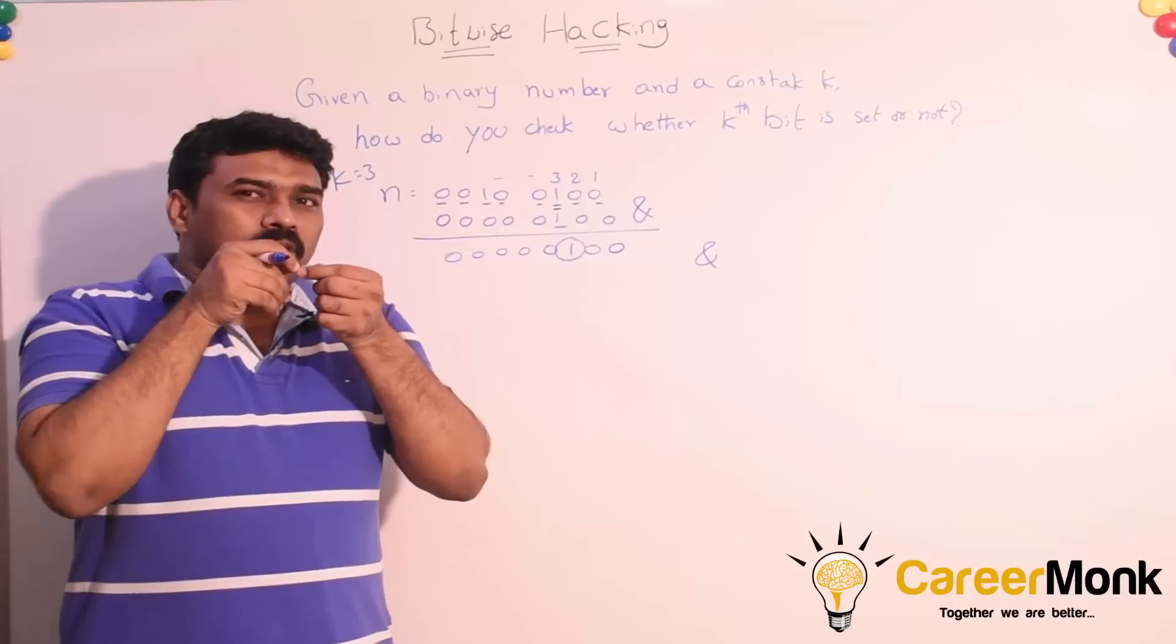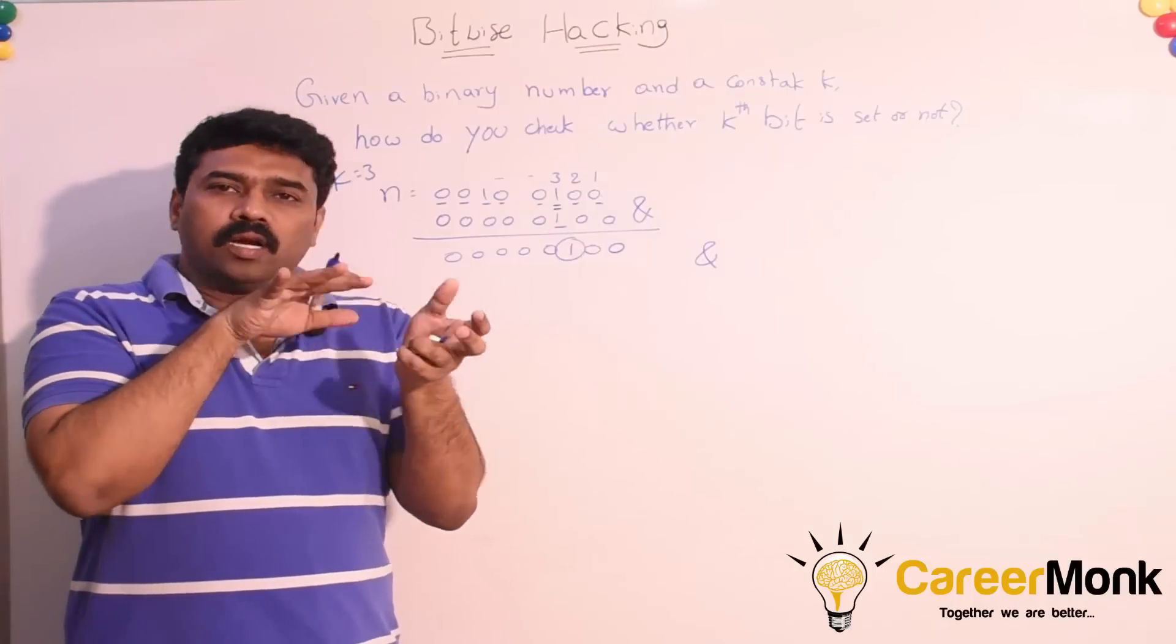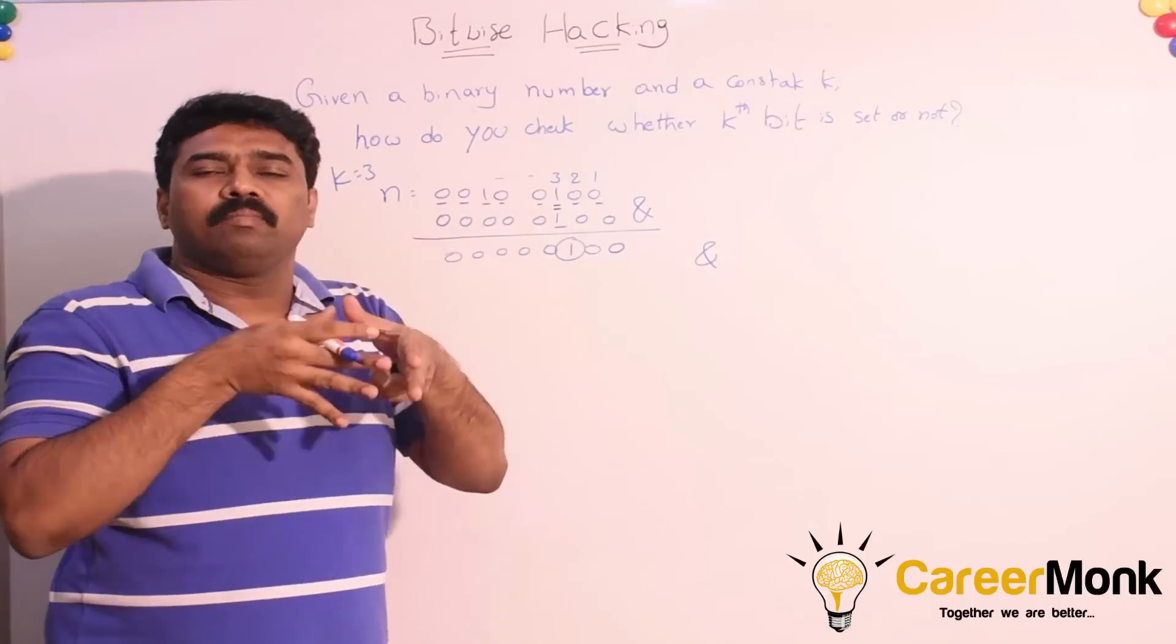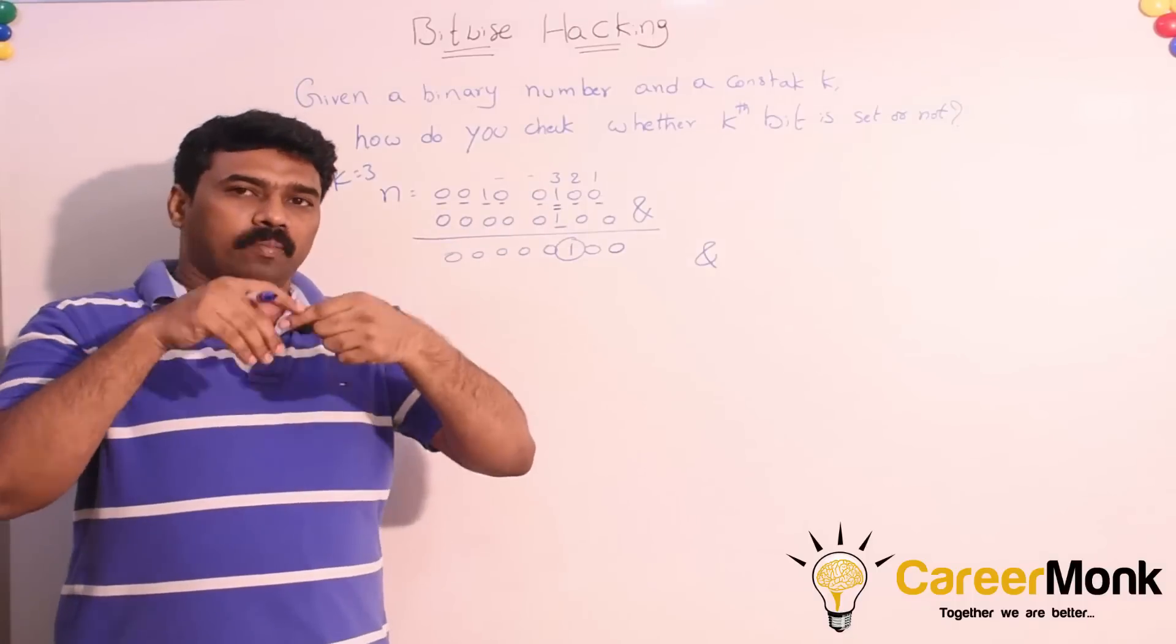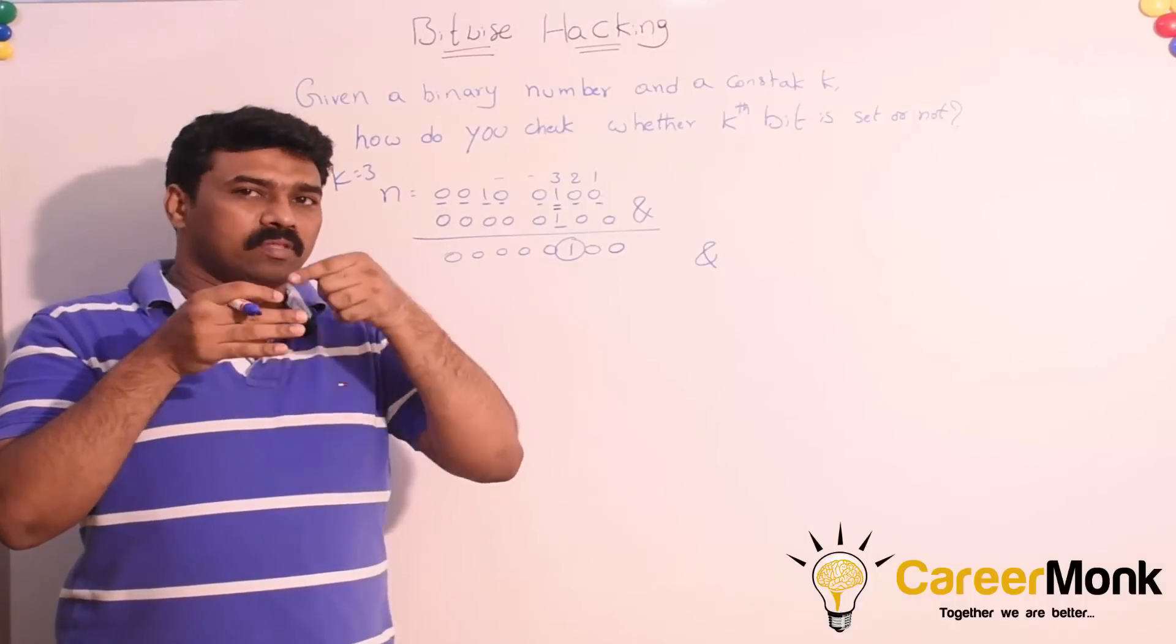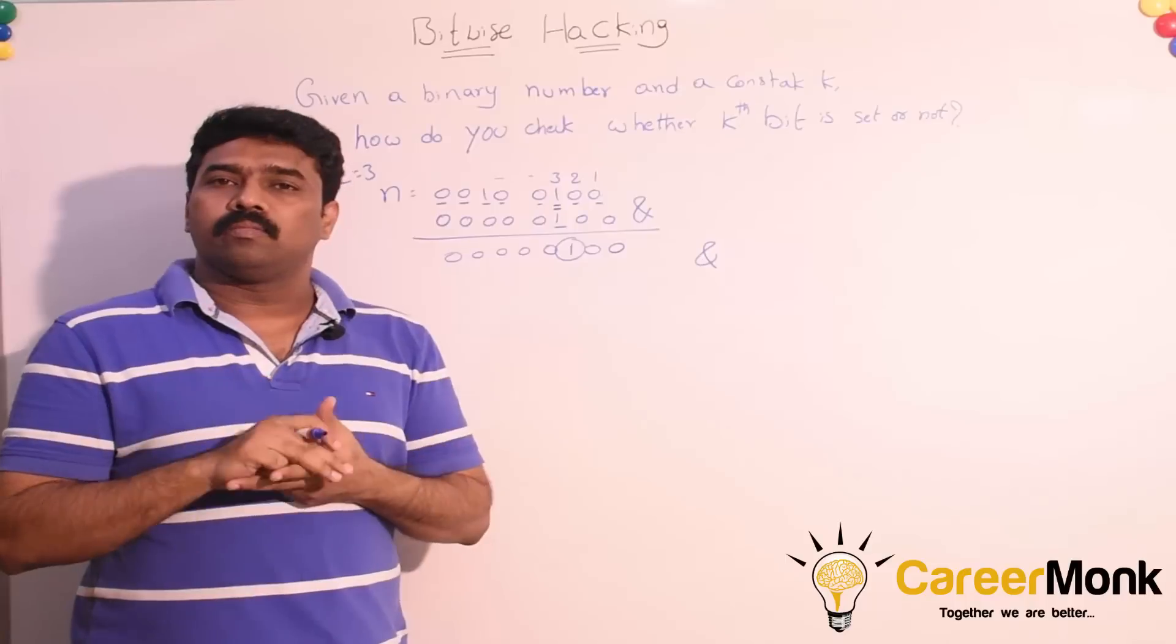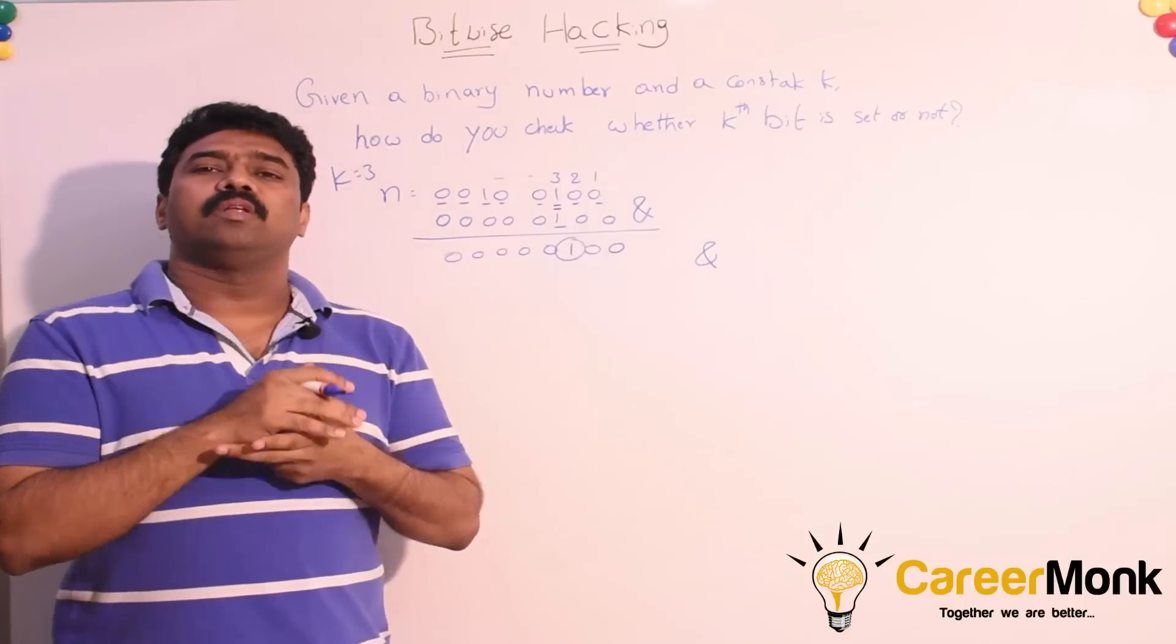What is the observation? Our objective is to see whether only the kth bit is set or not. We are not touching the remaining bits. That is why we are making sure that all the remaining bits are zeros. And for that kth bit, we are still making it as one. And if we perform bitwise AND operation with the given number, if the final result is non-zero, we can say the kth bit is set.